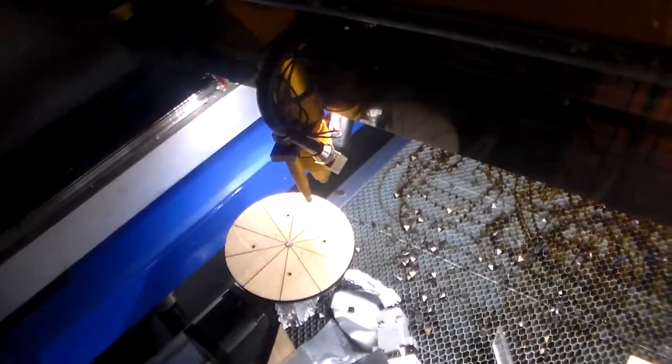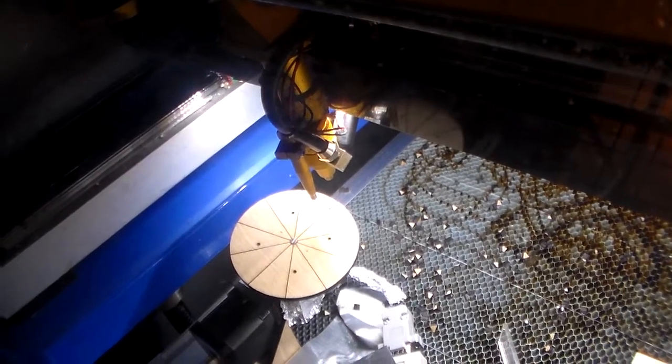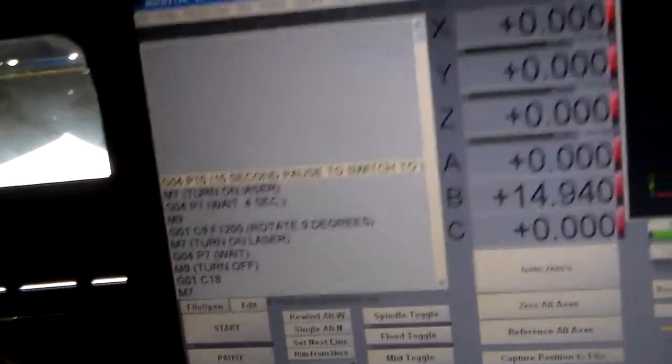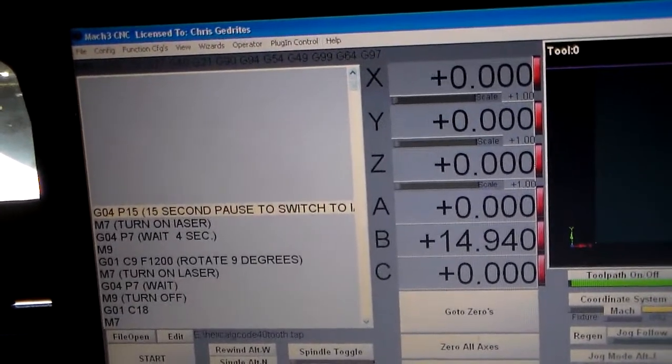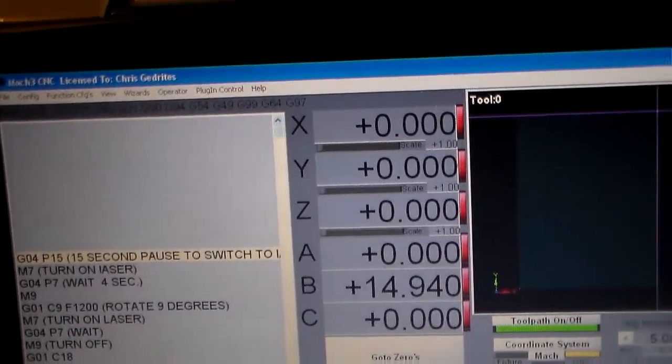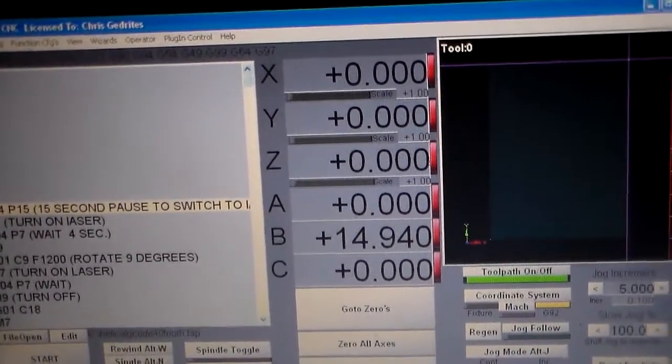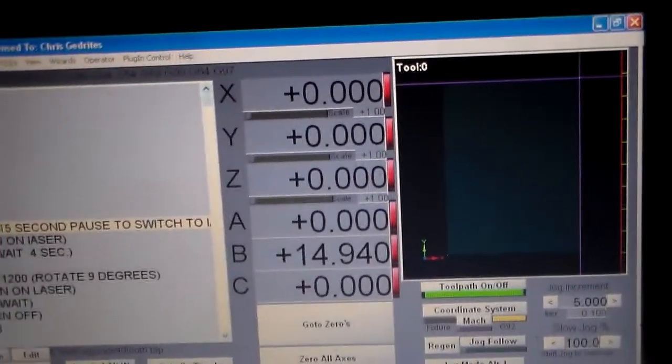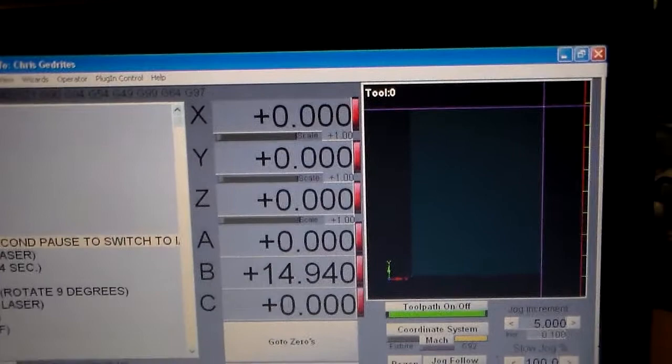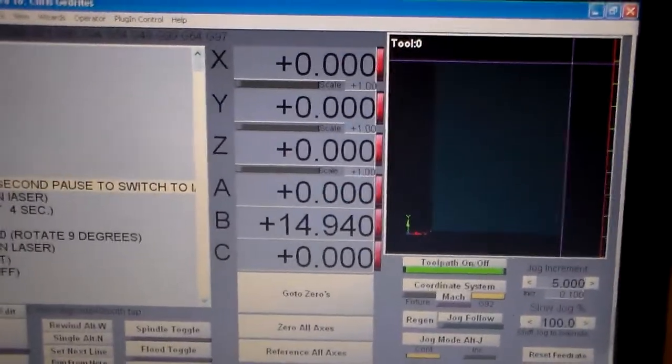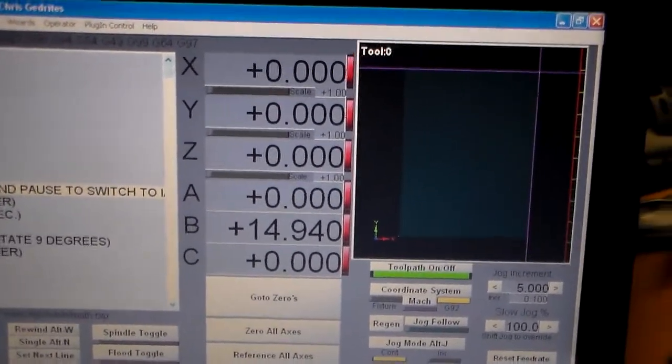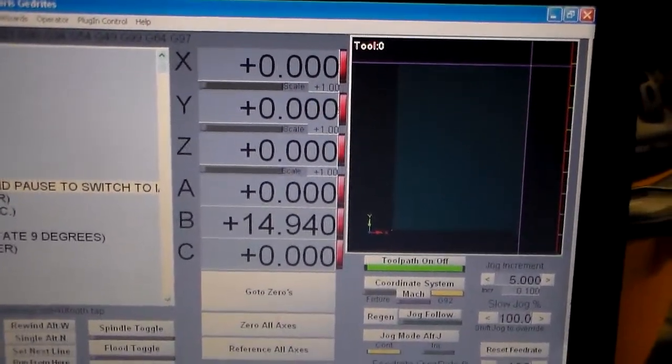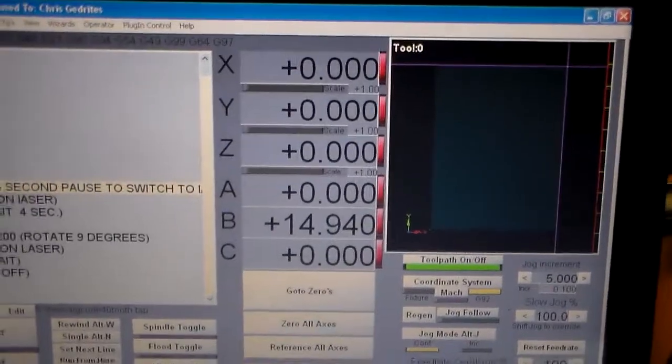I'm going to pause it and show you what the computer setup is like. Here's Mach 3 with a six-axis screen set. You can see that I have the B-axis set at 14.94, and that's because of the number of steps per revolution my computer makes, which is 11.1111 steps per degree.